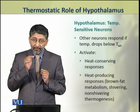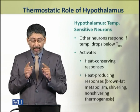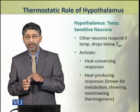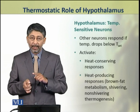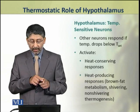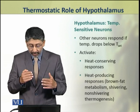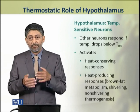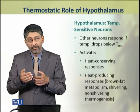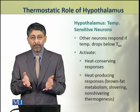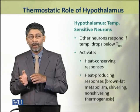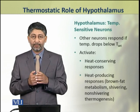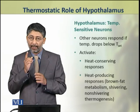The second type of neurons respond to temperatures dropping below the set temperature. When these neurons are activated, they respond by activating heat conserving and heat producing responses — for example, brown fat metabolism, shivering, or non-shivering thermogenesis. These responses are activated by cooling effects on the hypothalamic regulatory center.